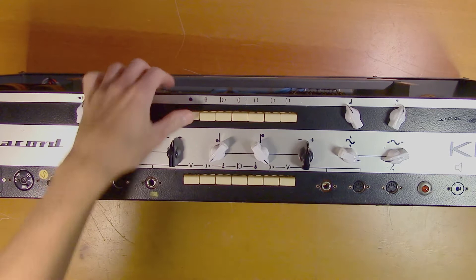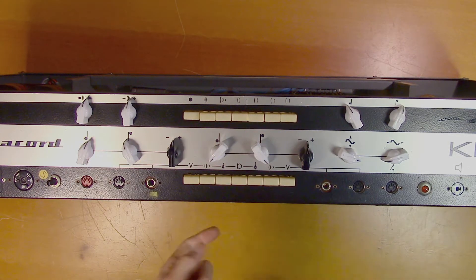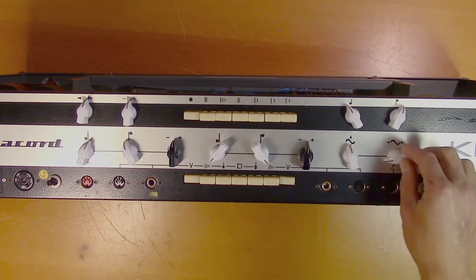Here you start the tape echo, and this determines which record and playback heads are going to be used. And then for the tremolo section, you have intensity and rate.